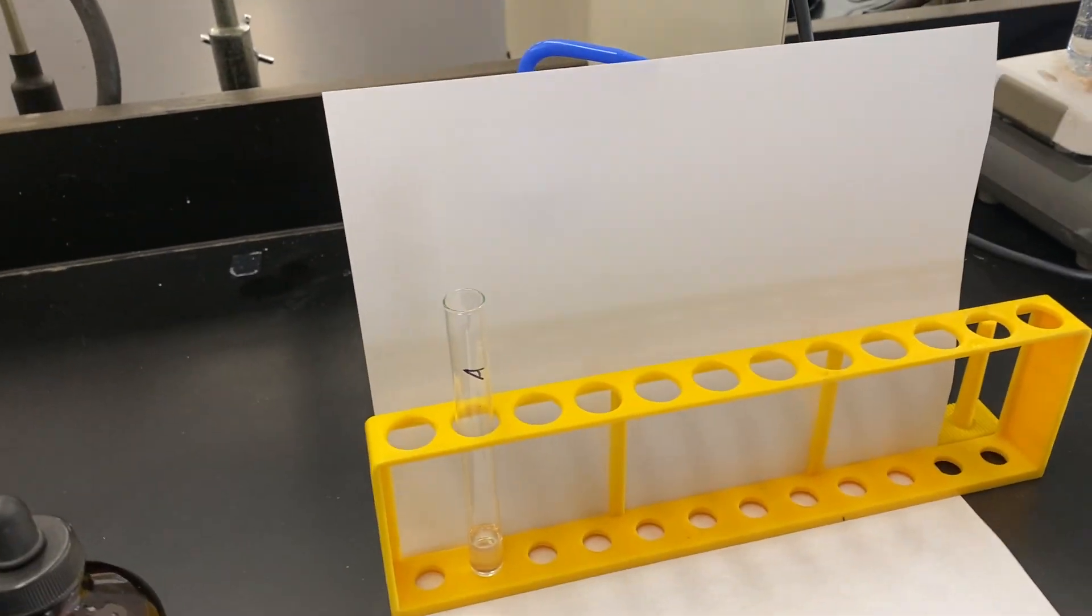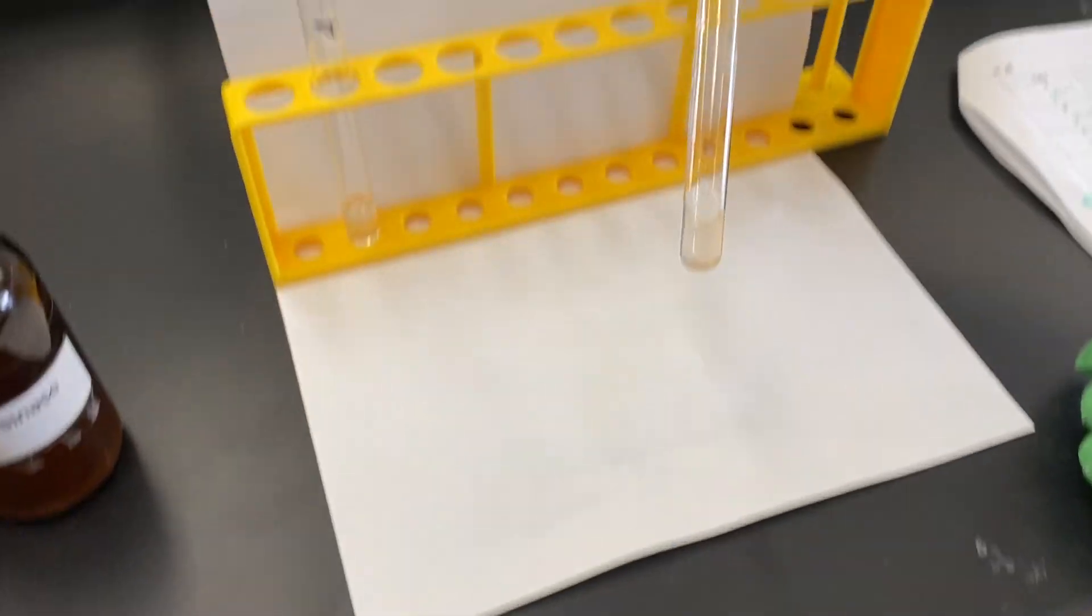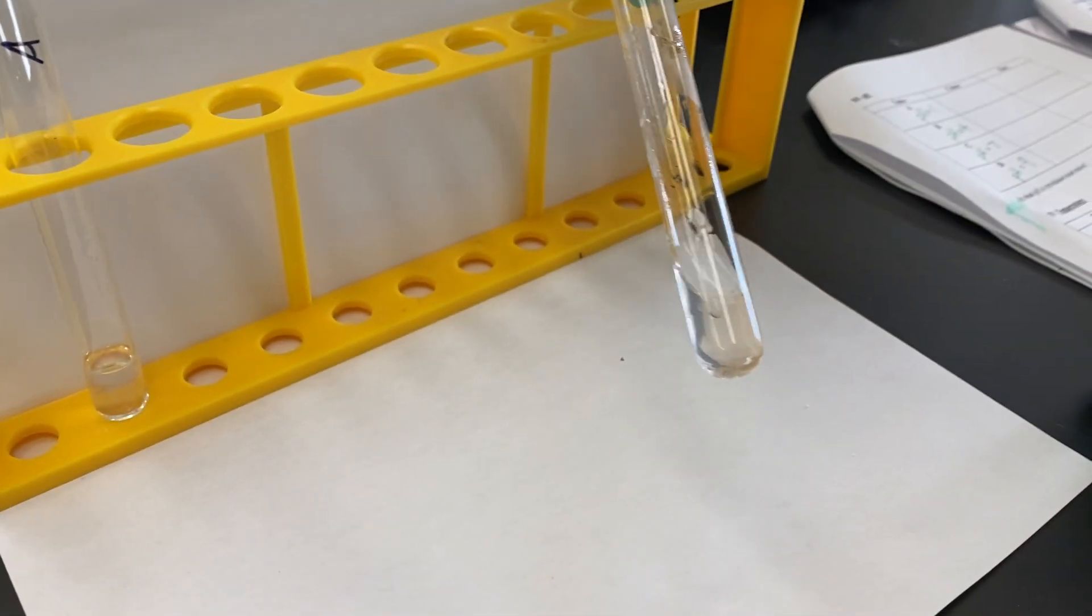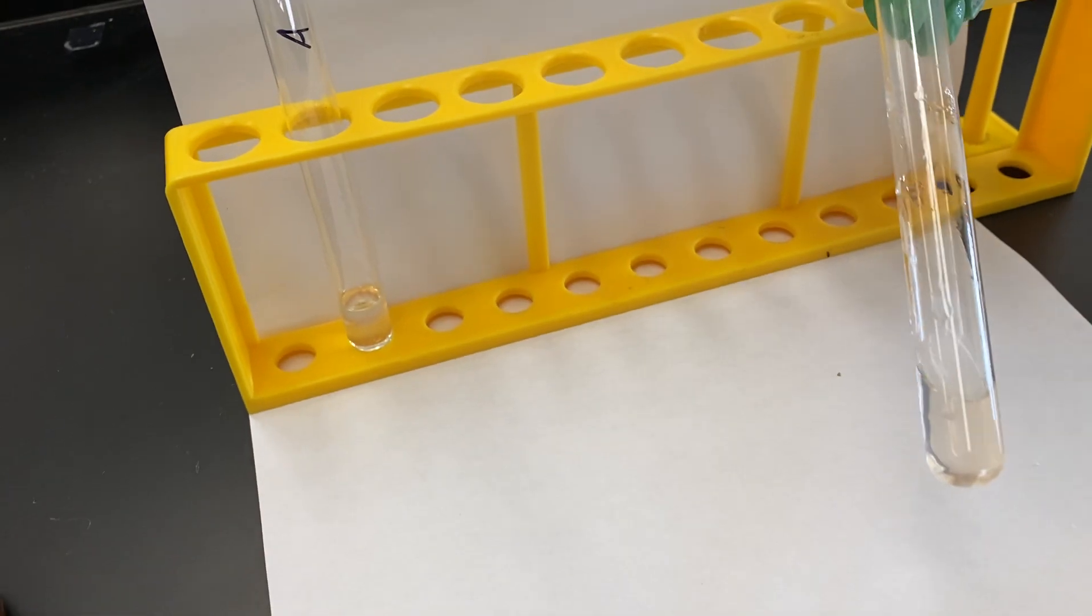If not, come with me. Test tube B. We're looking at pH 4. It's lactic acid. It has a light yellow tint, but really not much going on there. Maybe a little light yellow.